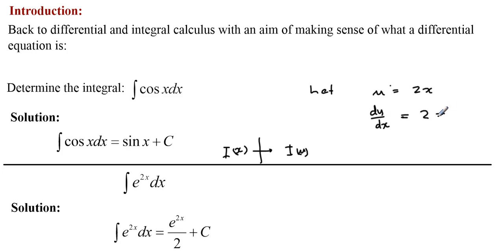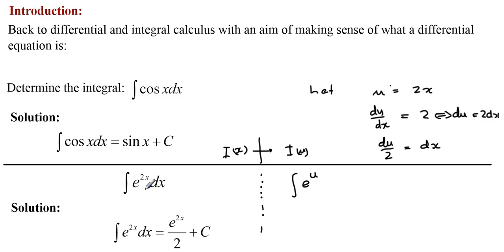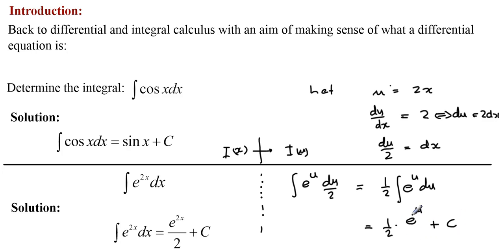So du equals 2·dx. Since we want to substitute dx with an expression in u, we divide both sides by 2, giving du/2 = dx. That integral now becomes the integral of e^u multiplied by du/2. We can factor out the constant one-half, giving (1/2)∫e^u du. This is an immediate integral of an exponential function, giving (1/2)e^u plus a constant. Doing backwards substitution, that explains why the final answer is (1/2)e^(2x) plus a constant.